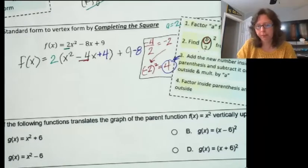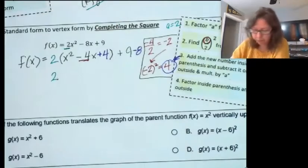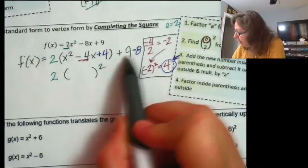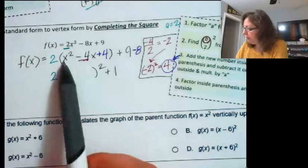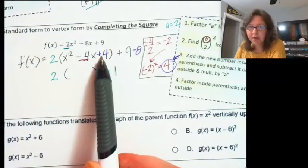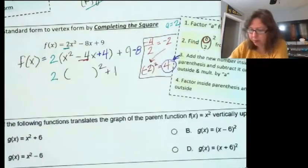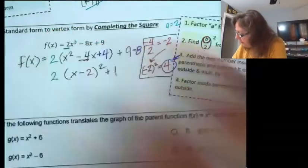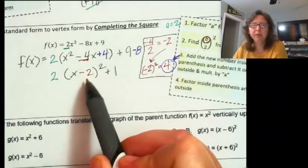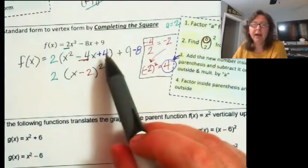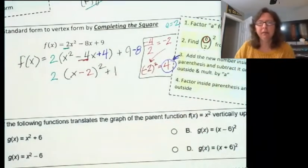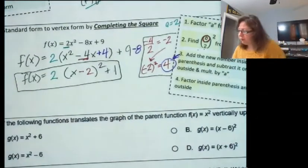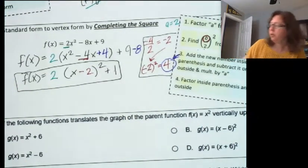Now I bring down the 2 outside, and 9 minus 8 is plus 1. I factor the inside — I don't have to think hard about factoring because the negative 2 is already part of the factor. So the inside becomes (x minus 2) squared. The negative 2 tells me what to put inside the parentheses; the 4 tells me what to add and then subtract outside. The vertex form is 2(x minus 2) squared plus 1.